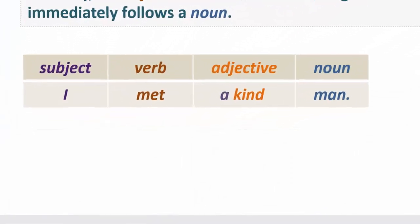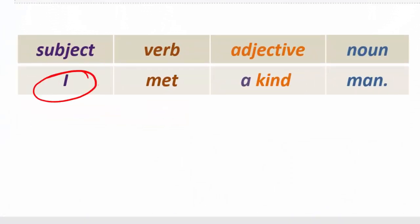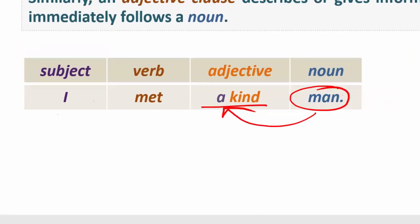The structure shows that first we write the subject, then we put the verb, and then the adjective, and after that the noun. I met a kind man. In this sentence, this adjective is modifying or giving more information about this noun. Since this noun is a singular count noun, there is an article before the adjective. It is 'a'.